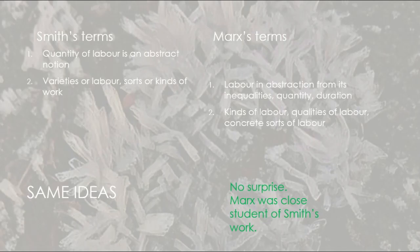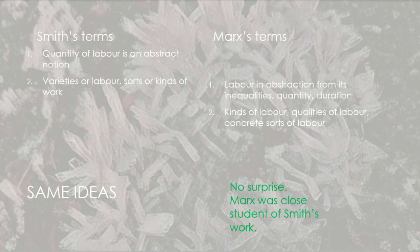Smith is talking about quantity of labour being an abstract notion, and he distinguishes between unqualified labour — meaning labour in the abstract — and what he calls varieties of labour, or sorts or kinds of work, by which he means particular trades or professions like farming, spinning, etc. Marx's terms are analogous, though not identical. He talks about labour in abstraction from its inequalities, measured in terms of quantity and duration, and also, like Smith, talks about various kinds, qualities, or concrete sorts of labour.